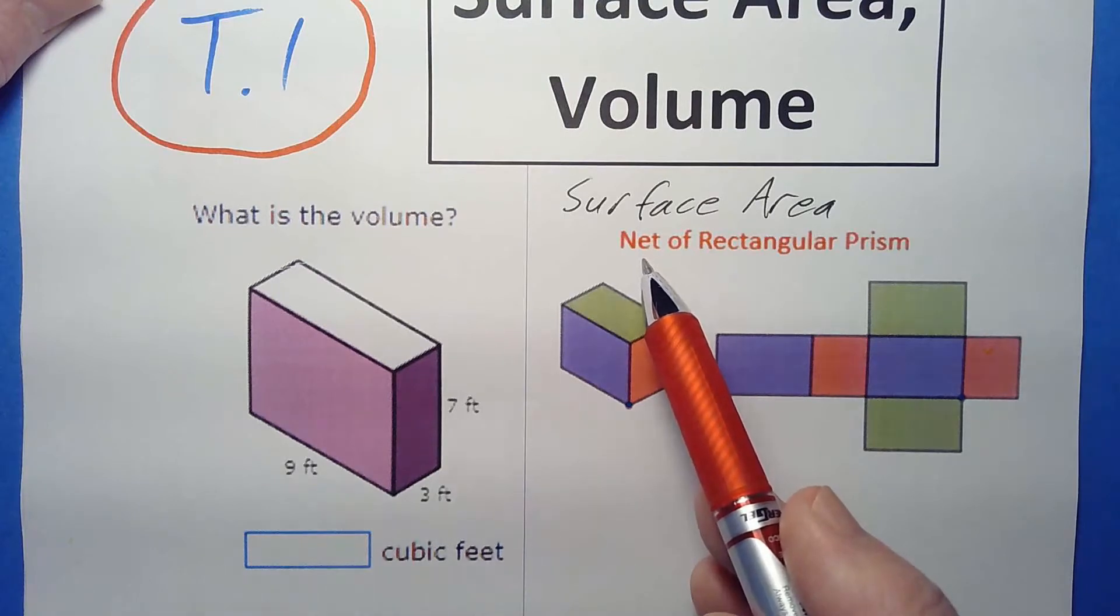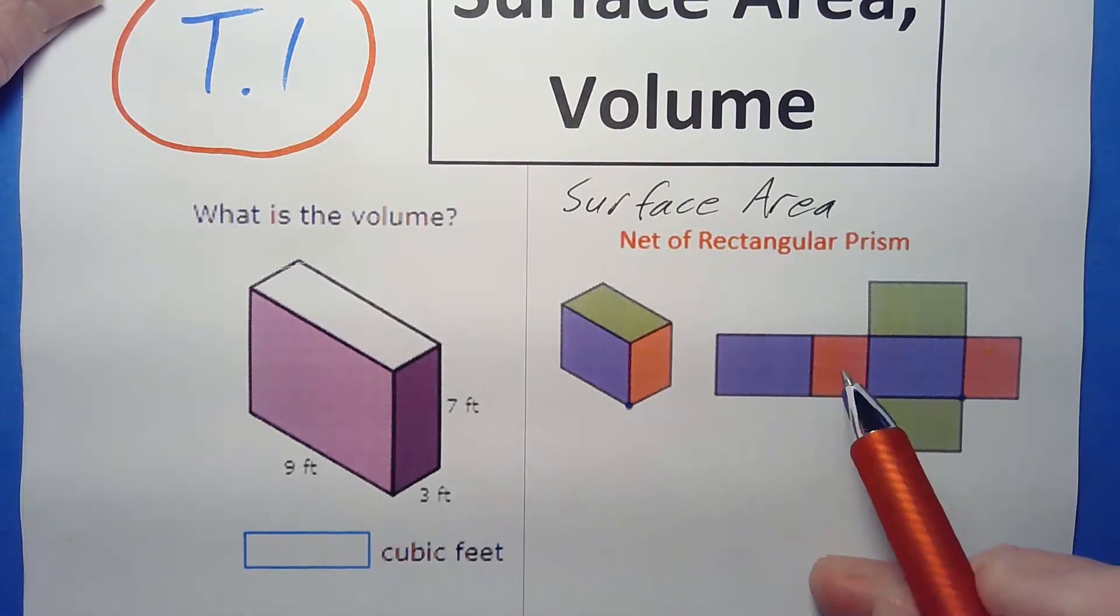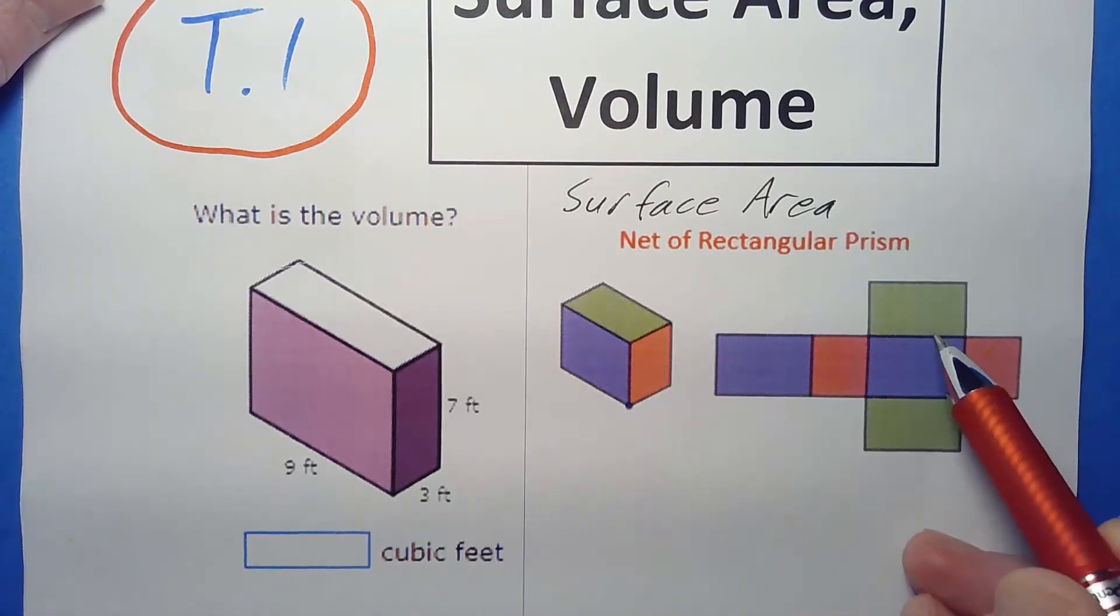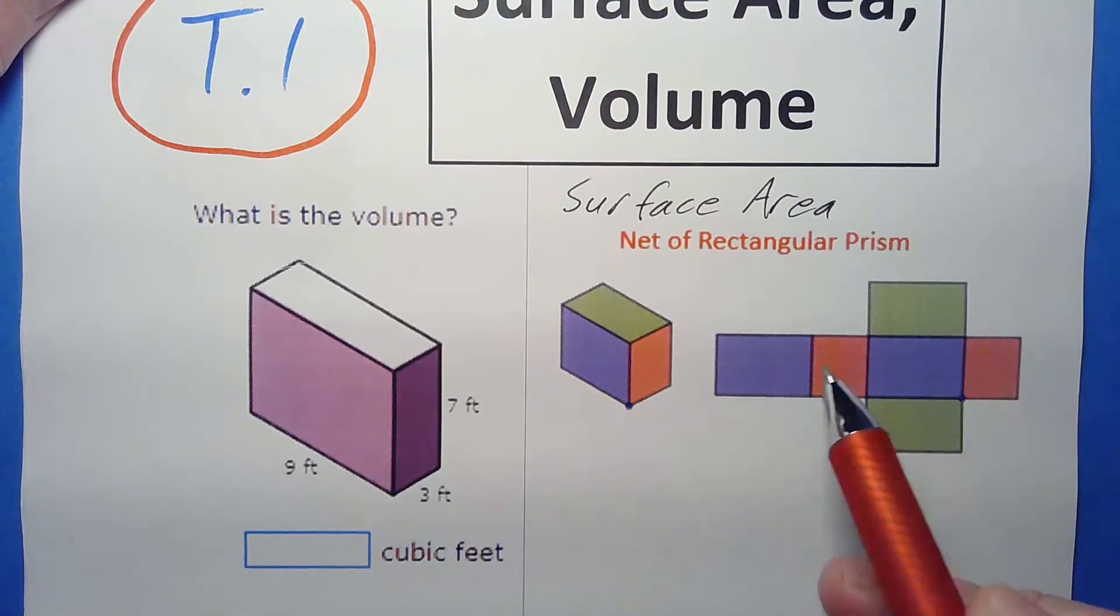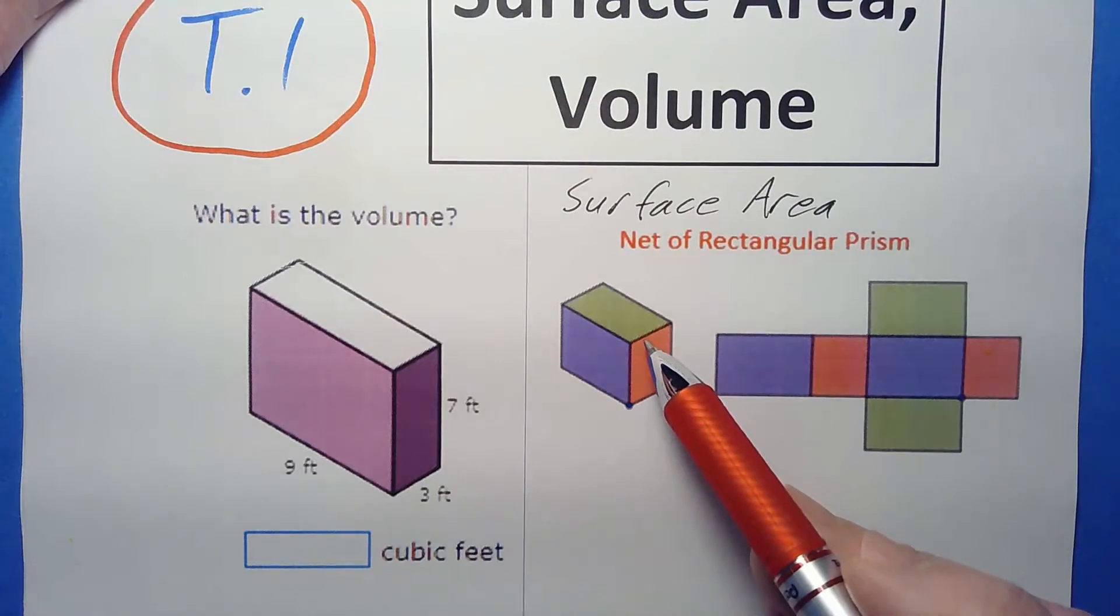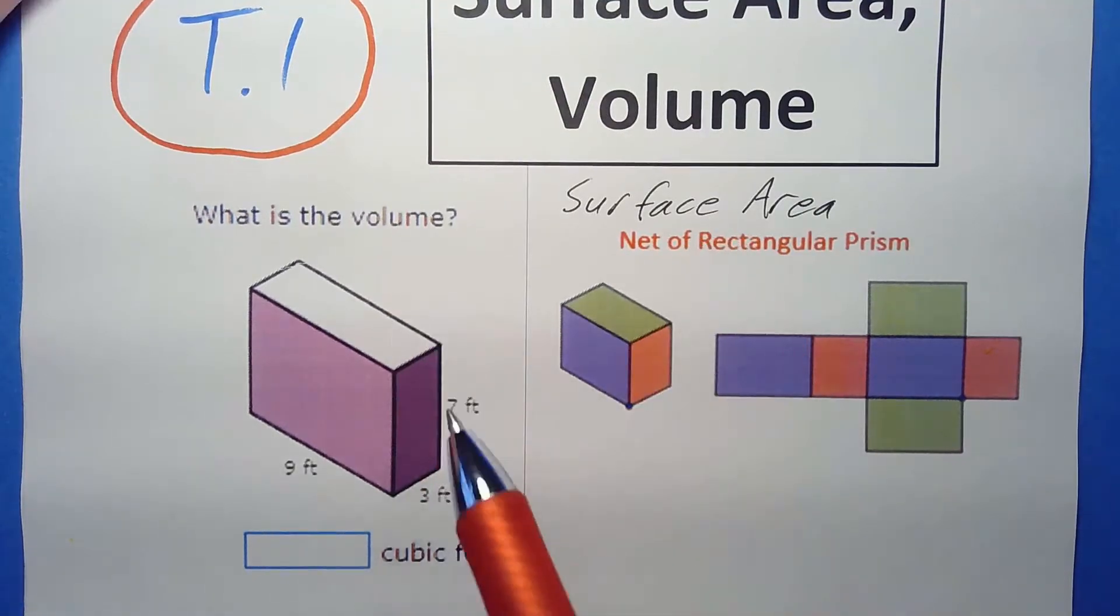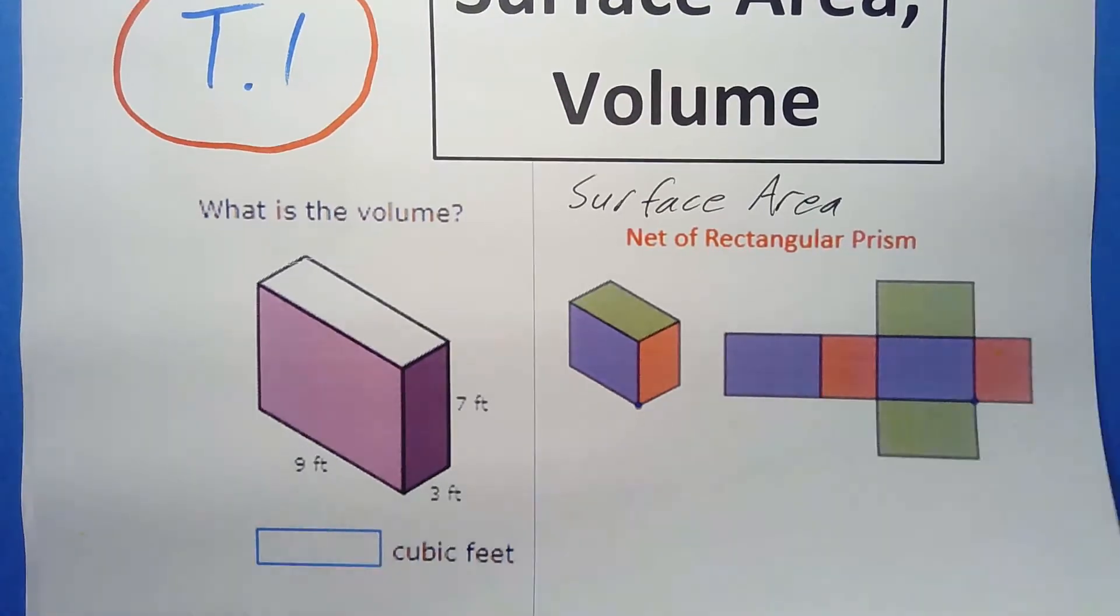Sometimes we call it the net. Net is a way to visualize it. It's like, what are all the pieces of cardboard if you were making this with cardboard? How much cardboard would you need to make this box? So that's surface area versus volume - how much stuff can you put inside.